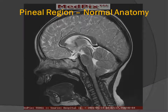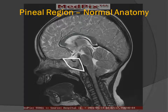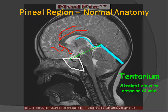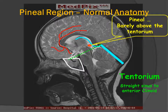Let's take a look at the pineal region normal anatomy. This is a sagittal T2-weighted image. We can see the clivus, the corpus callosum, and the flow voids for the branches of the anterior cerebral artery. We can also see the flow voids for the internal cerebral veins, the great vein of Galen, and the straight sinus. The orientation of the opening in the tentorium — the hiatus — is between the anterior clinoid process and the anterior margin of the straight sinus. The pineal gland is located at the crossroads between supratentorial and infratentorial, just above the tentorial hiatus.